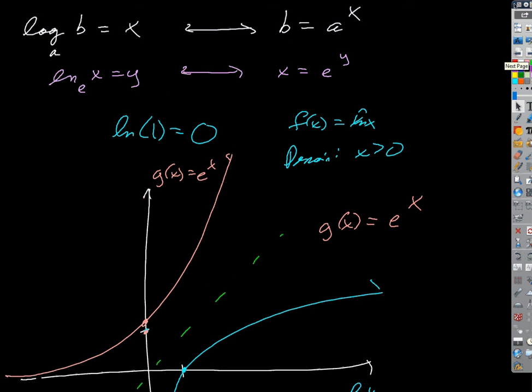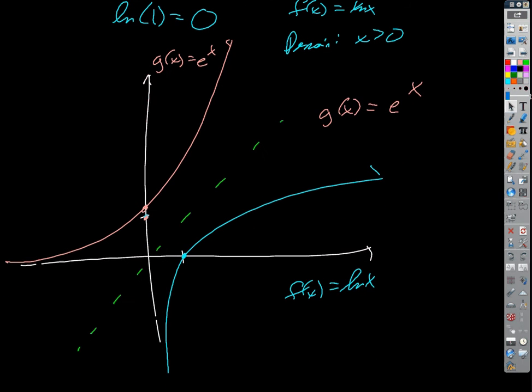We looked at some general things. I reviewed with you symmetry of inverse functions or inverse relations. What's the trick if you want to graph the inverse of a relation? It's the reflection over the line y equals x. But what's the little trick I showed you? 90 degrees. 90 degrees counterclockwise and then flip over the y-axis. Good.